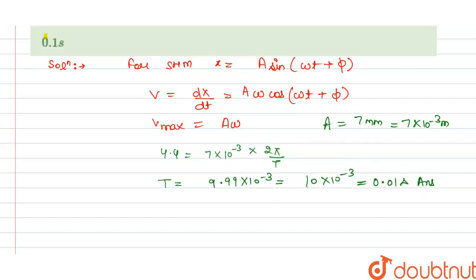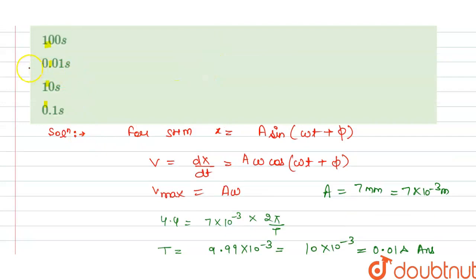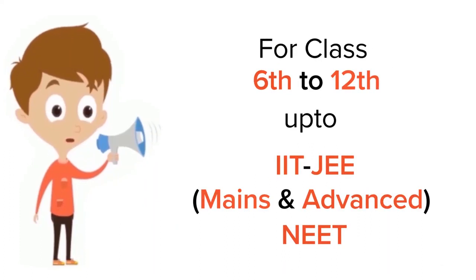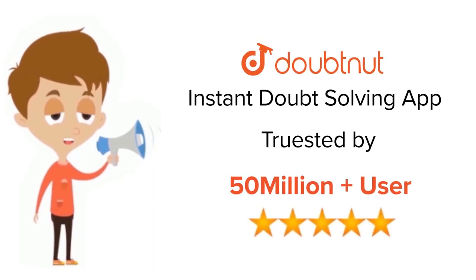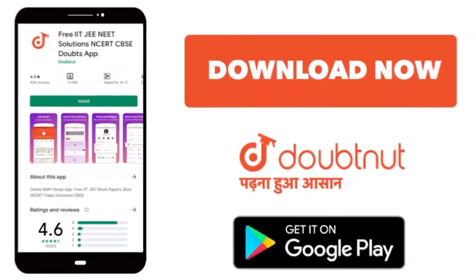And this is the answer for the question. Now we check which option is correct here, option B is correct. Thank you. For class 6-12, IIT JEE and NEET level, trusted by more than 5 crore students, download Doubtnut app today.